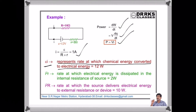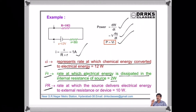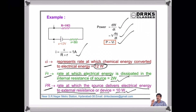I²r = 2 watts represents the rate at which electrical energy is dissipated in the internal resistance of the source, while I²R = 10 watts represents the rate at which the source delivers electrical energy to the external resistance. The sum 10 watts + 2 watts = 12 watts, in accordance with the law of conservation of energy.